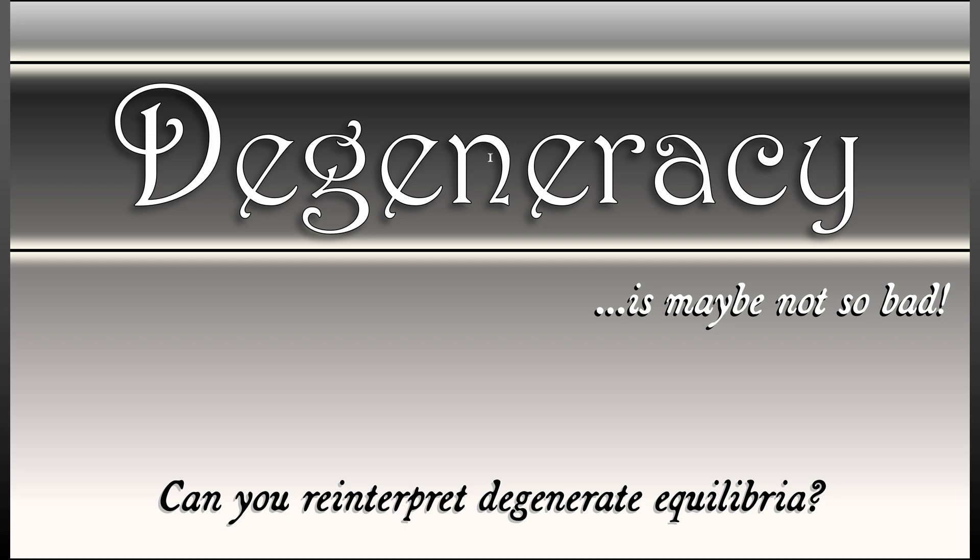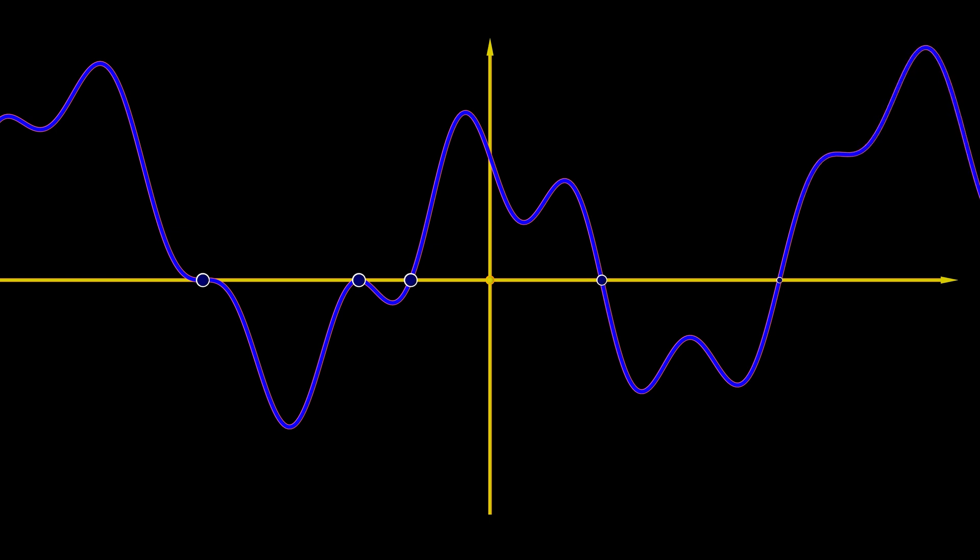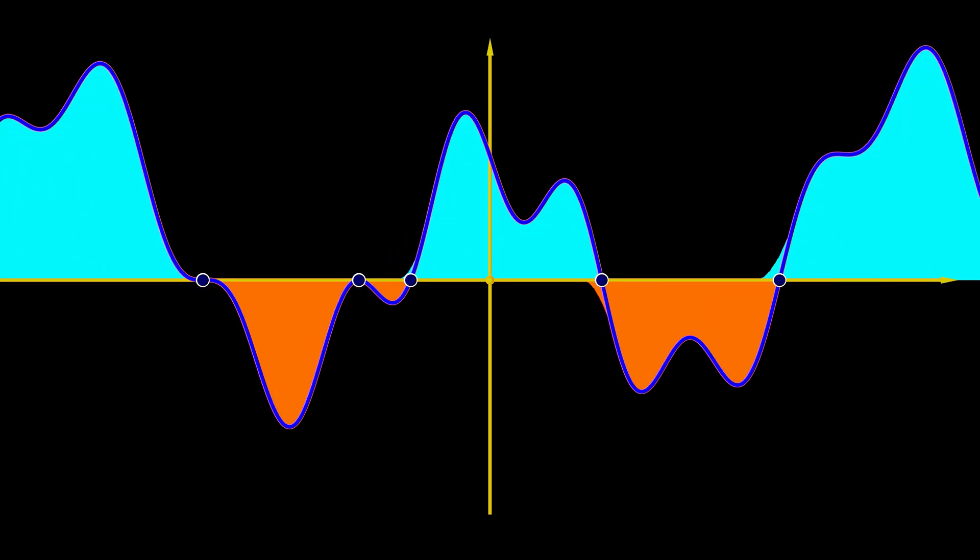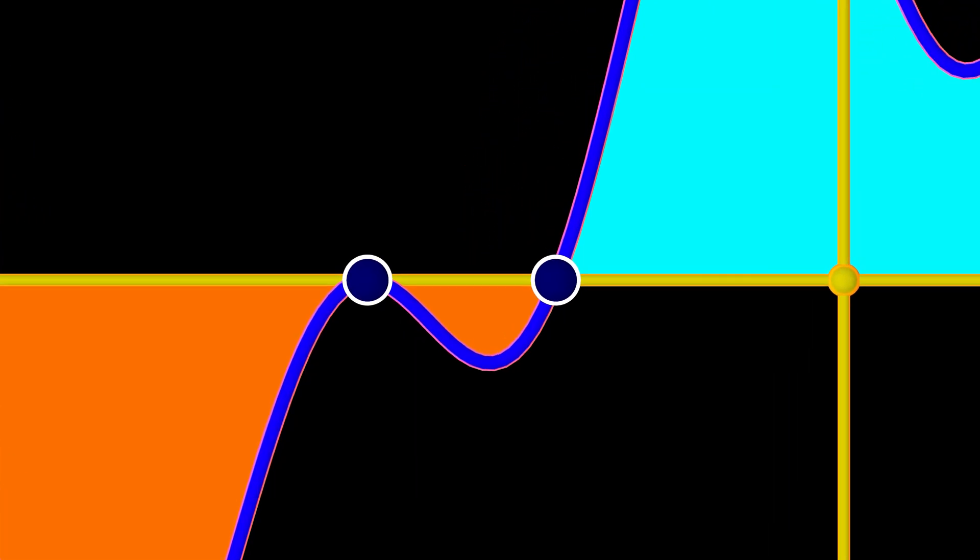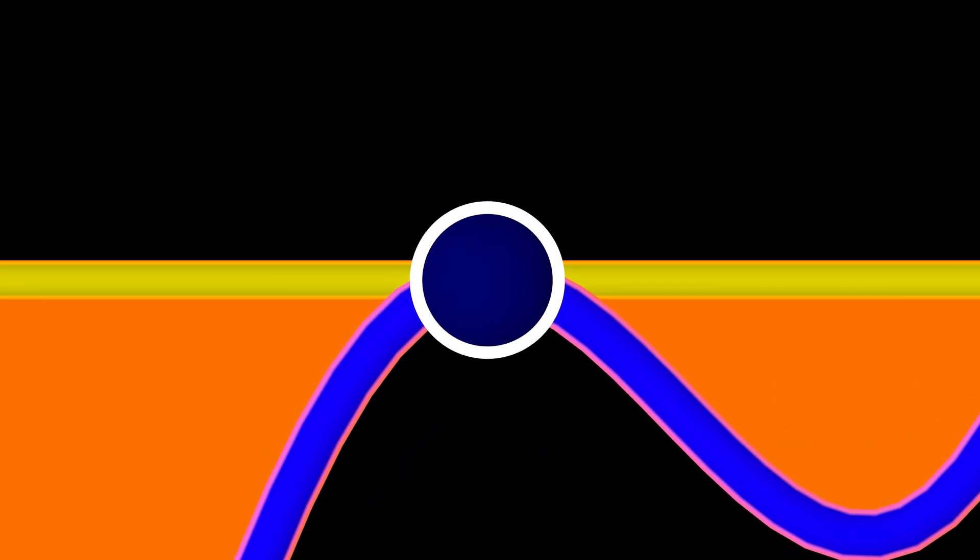Let's think about what happens when we have a degenerate equilibrium. That means that the derivative of the right-hand side at the equilibrium is zero. This could happen in a number of different ways. For example, if we had a quadratic tangency, if we had something where the second order term was non-zero, then what that means is that it's sort of stable on one side and unstable on the other side. That's kind of weird, but it kind of makes sense.